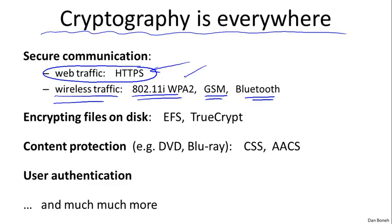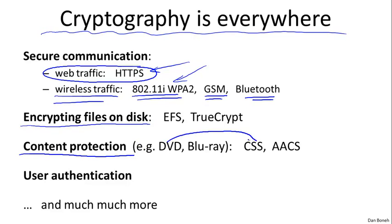In fact, we're gonna cover SSL, and even 802.11i in quite a bit of detail, and you'll see how these systems work in practice. Cryptography is also used for protecting files that are stored on disk by encrypting them, so that if the disk is stolen, the files are not compromised. It's also used for content protection. For example, when you buy DVDs and Blu-ray discs, the movies on these discs are encrypted. In particular, DVD uses a system called CSS, the content scrambling system, and Blu-ray uses a system called AACS. We'll talk about how CSS and AACS work. It turns out that CSS is a fairly easy system to break, and we'll do some cryptanalysis and actually show how to break the encryption used in CSS. Cryptography is also used for user authentication and many other applications that we'll talk about in the next segment.